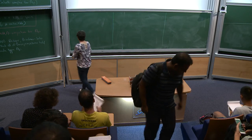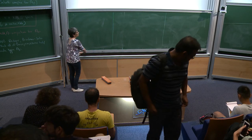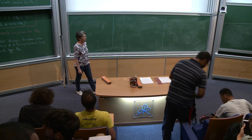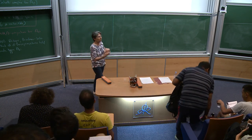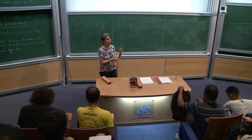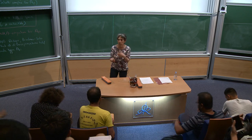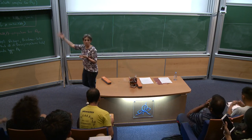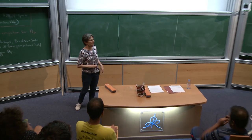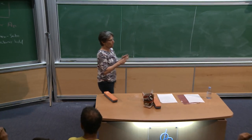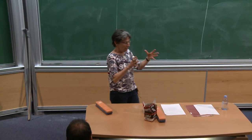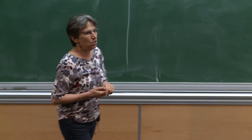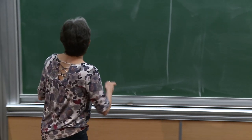I'm going to pretty much pick up where I left off. I want to tell you about some geometric techniques we've been using to try to answer some of these questions about Artin groups, and the first geometric object we want to play with is called the Deligne complex.